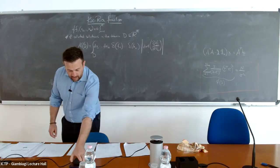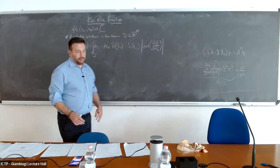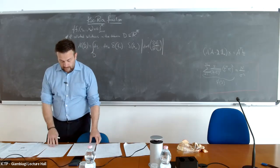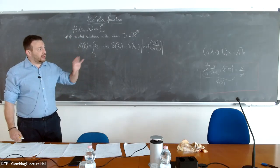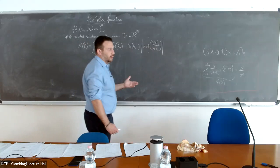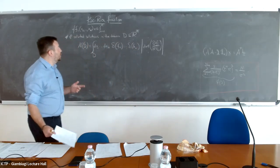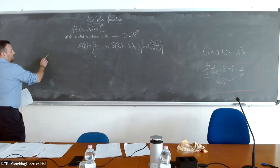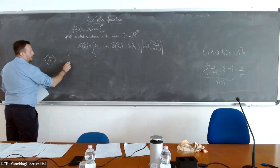Welcome back. Just recall that we wanted to compute the statistics of critical points in this constrained problem, where you have a set of linear equations with a quadratic constraint that imposes that the solution must live on the sphere of radius n. We're going to do it using the Katz-Reyes formalism, which in our setting translates into the following problem.